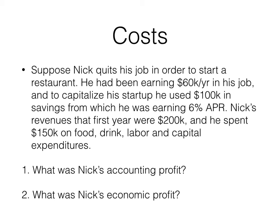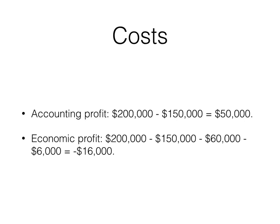Nick's accounting profit is really going to be total revenue minus explicit costs. In this case, his total revenue is $200,000 and his explicit costs were $150,000. Therefore, his accounting profit is $50,000.